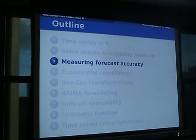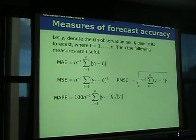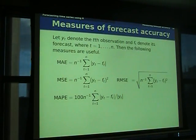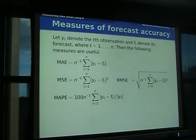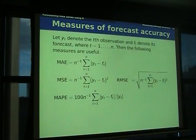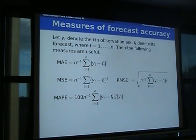Let me talk about how we decide whether something's accurate. If Y is my observation and F is the forecast, the absolute error, mean squared error, and root mean squared error are the typical statistical measures. Mean absolute percentage error is a favourite among business forecasters — you take the percentage error, i.e., the difference divided by the actual observation times 100.